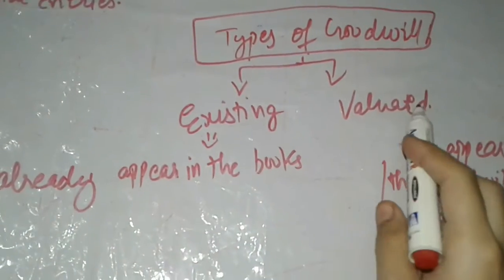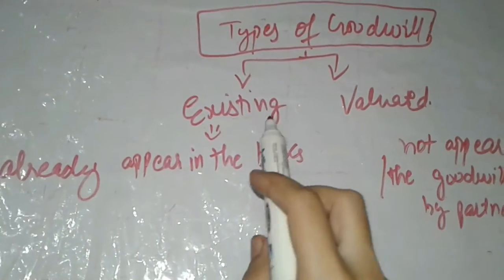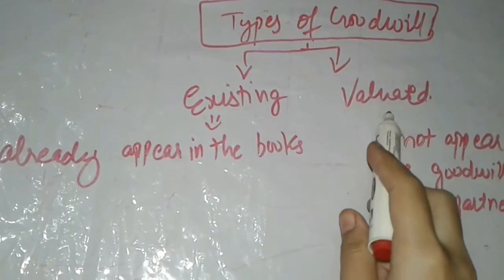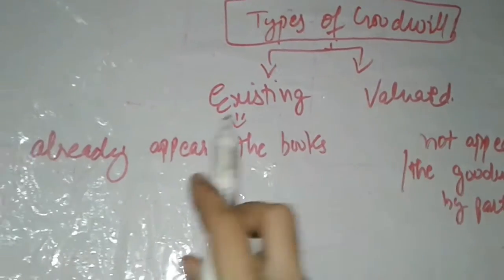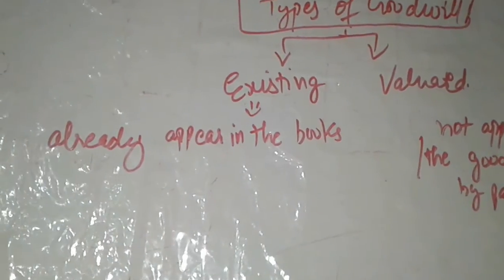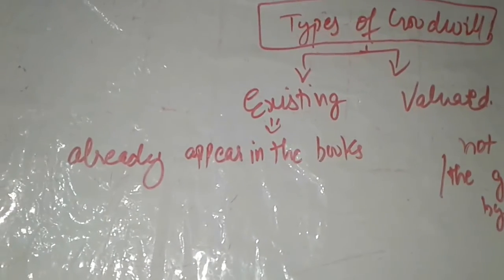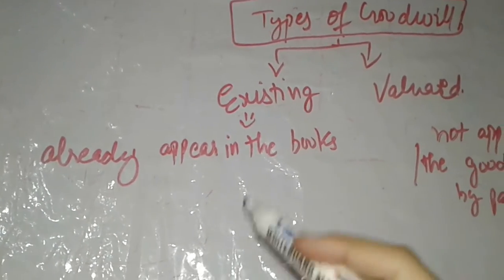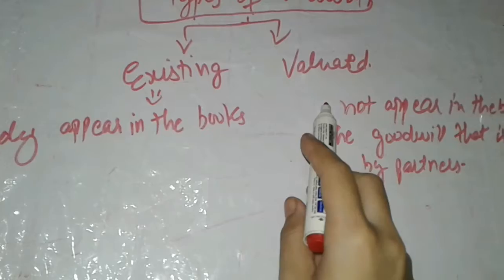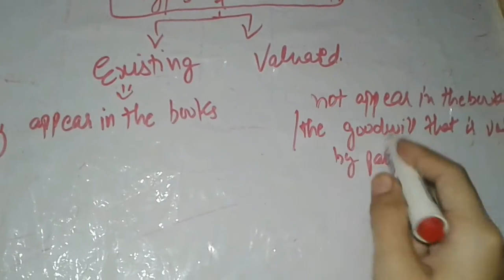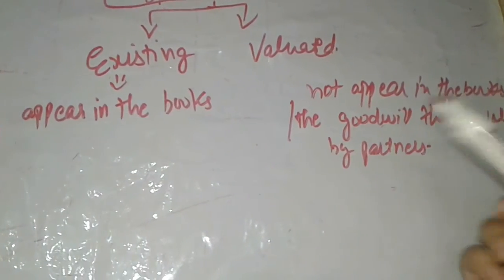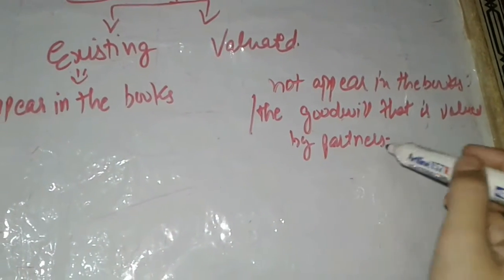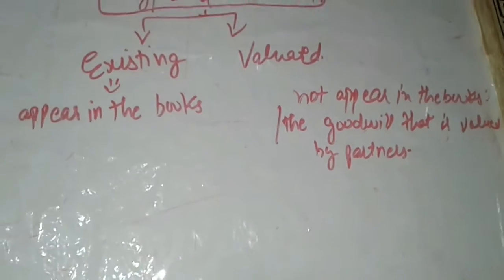Next topic: types of goodwill. Mainly there are two types. First, existing goodwill — the goodwill that already appears in the books of account, mainly in the balance sheet. Second, valued goodwill — that which does not appear in the books of account, or you can say the goodwill that is valued by the partners.